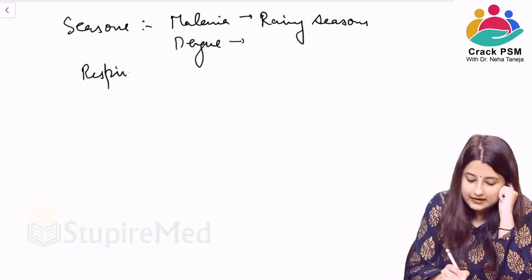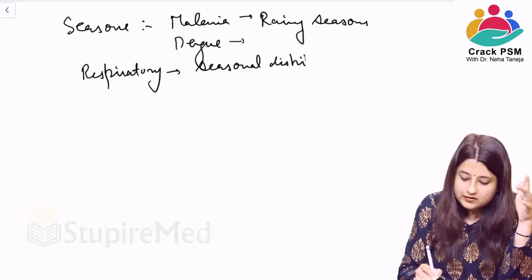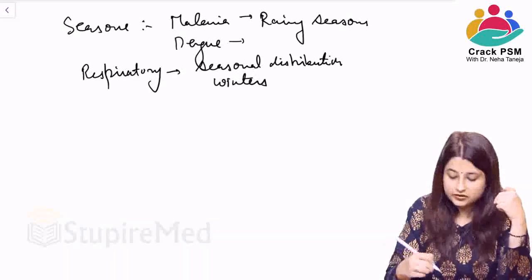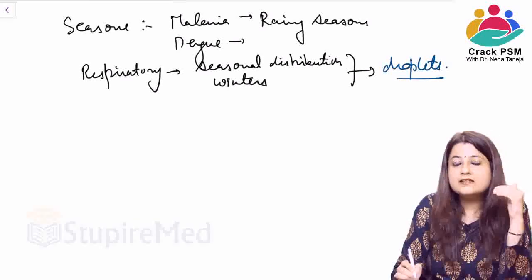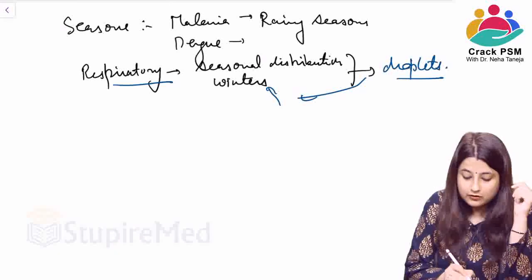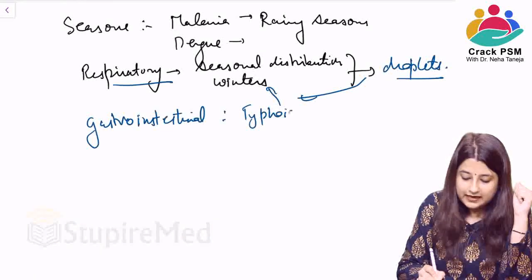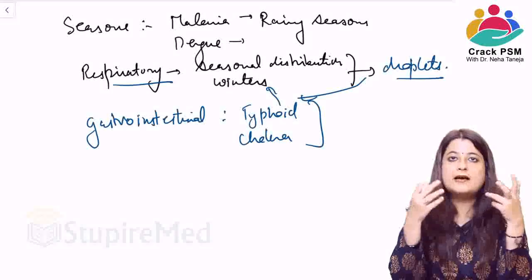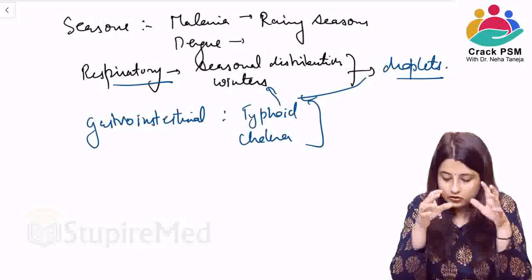All respiratory diseases like H1N1 and influenza follow a seasonal distribution — they occur mostly during winters. Although you get cases of common cold throughout the year, the frequency increases in winter because respiratory diseases spread by droplets, which remain suspended in air longer during winters. Gastrointestinal diseases like typhoid and cholera do not follow a seasonal distribution because you can eat contaminated food at any time of year.